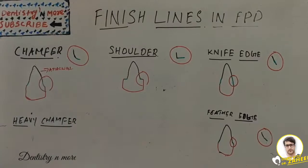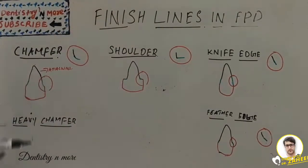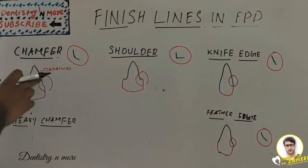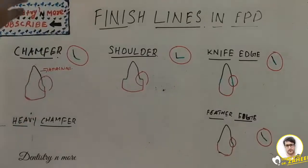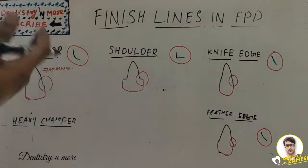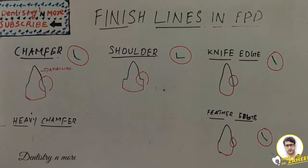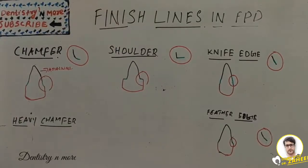A finish line is nothing but the axial wall — the gingival wall — where the final part or the gingival part of the retainer will be placed. It has importance in aesthetics and preservation of tooth structure. A finish line should follow a few characteristics: shallow bevels which are parallel to the cavo surface should be avoided.